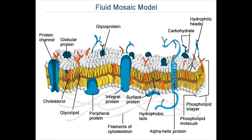The peripheral proteins are temporarily bound to the lipid bilayer or to integral proteins by a combination of hydrophobic, electrostatic, and other non-covalent interactions. Some integral proteins stick out of both sides of the membrane, while others protrude through only one side.